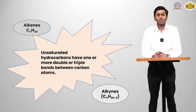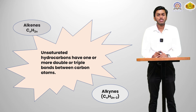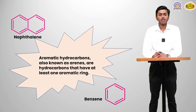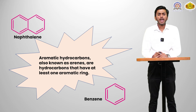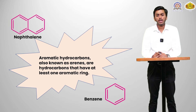Unsaturated hydrocarbons have one or more double or triple bonds between carbon atoms. They can be alkenes and alkynes. Alkenes have a general formula of CnH2n and alkynes have a general formula of CnH2n-2. Aromatic hydrocarbons, also known as arenes, are hydrocarbons that have at least one aromatic ring.